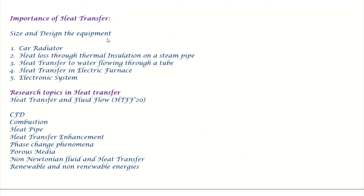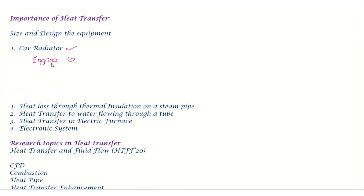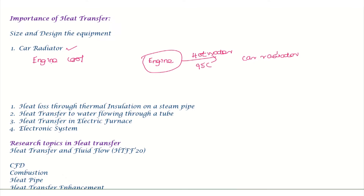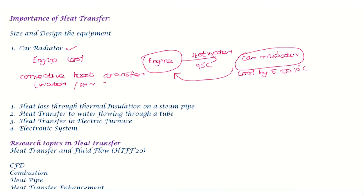Consider the importance of heat transfer in designing a car radiator. The engine uses water cooling — water absorbs heat from the cylinder wall and carries it to the radiator, where heat is rejected to the air. The hot water from the engine may be at 95 degrees Celsius, and the radiator fan cools it to within 5 to 10 degrees Celsius, then circulates it again to maintain a safe temperature in the cylinder wall. This requires understanding convective heat transfer between water and air.